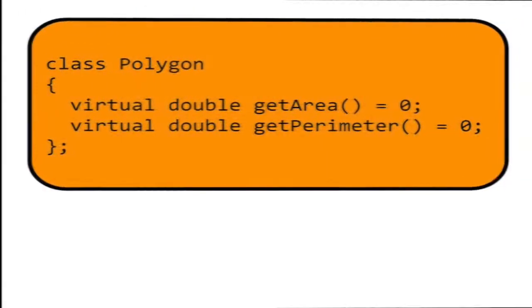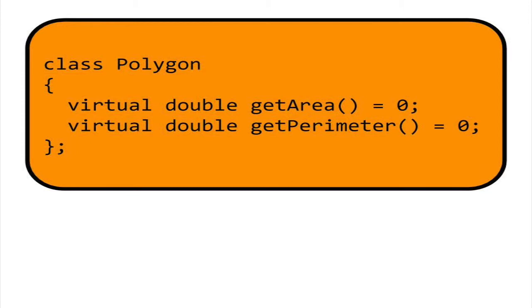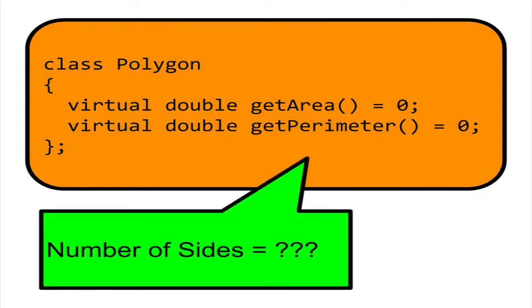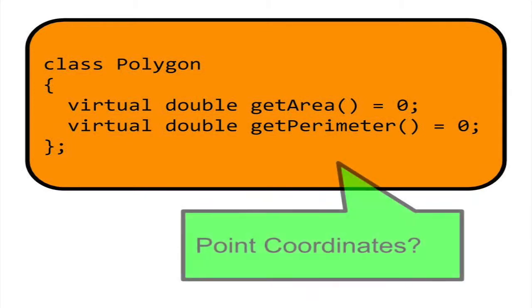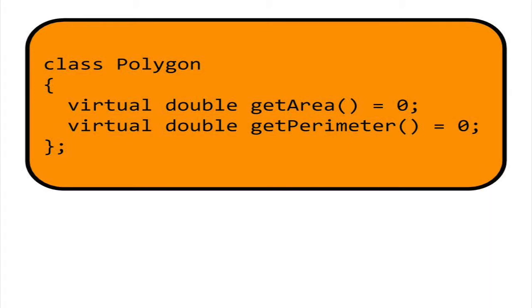It's impossible to measure the area and perimeter of a polygon unless we know the number of sides and each of its side lengths. Still, it's useful to include the area and perimeter methods as virtual functions in the base class since they describe essential components of any polygon.